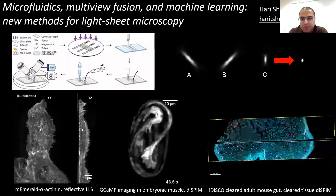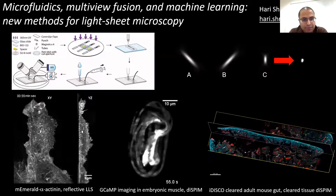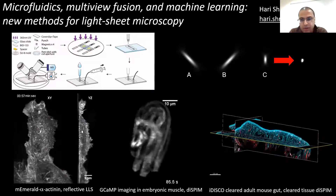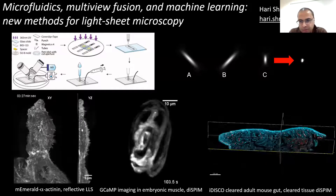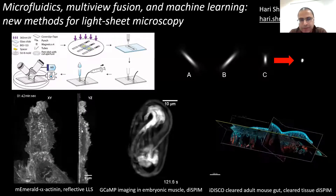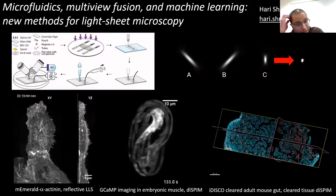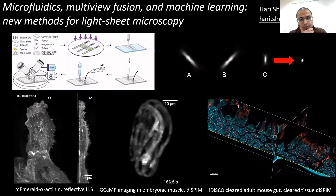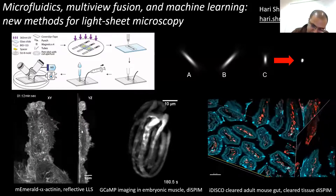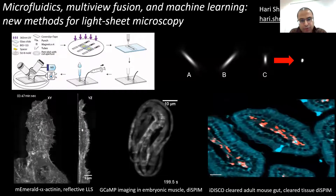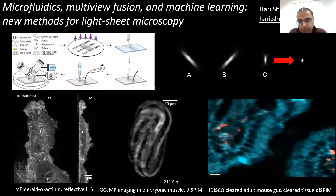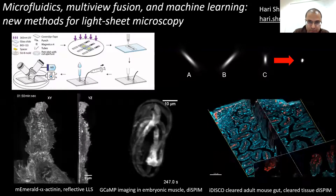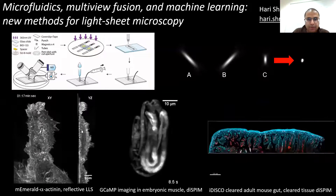Welcome back everybody. I thought I'd switch over and talk about some research efforts, but I wanted to continue in the theme of light sheet microscopy since we just talked about it. I want to talk about three different areas: microfluidics for light sheet microscopy, deconvolution and registration, and machine learning using deep learning to further improve the performance of light sheet microscopy. Let's start with the microfluidics.